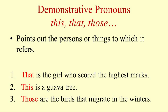Demonstrative pronouns — the words like this, that, those, these point out the persons or things to which these pronouns refer. Let us understand this with these sentences. That is the girl who scored the highest marks. This is a guava tree. Those are the birds that migrate in the winters. In these sentences, the pronouns that, this and those are pointing out to some noun. Therefore, they are called demonstrative pronouns. They are not only pointing out to something or someone — they, like all pronouns, are referring to or replacing the nouns as well. They help the listener to understand exactly what or whom the speaker is talking about.